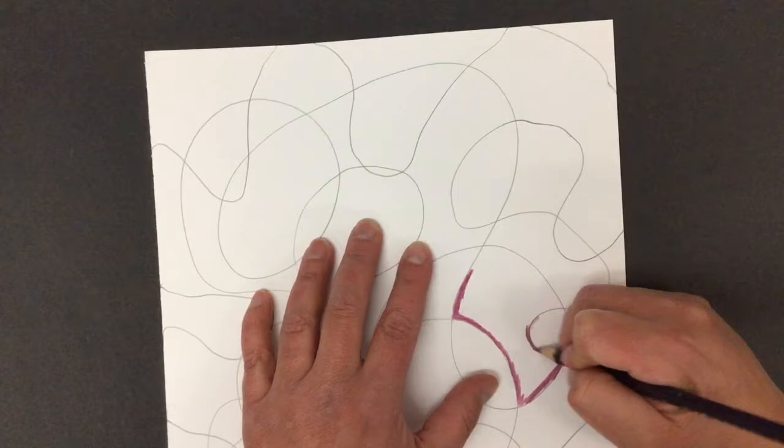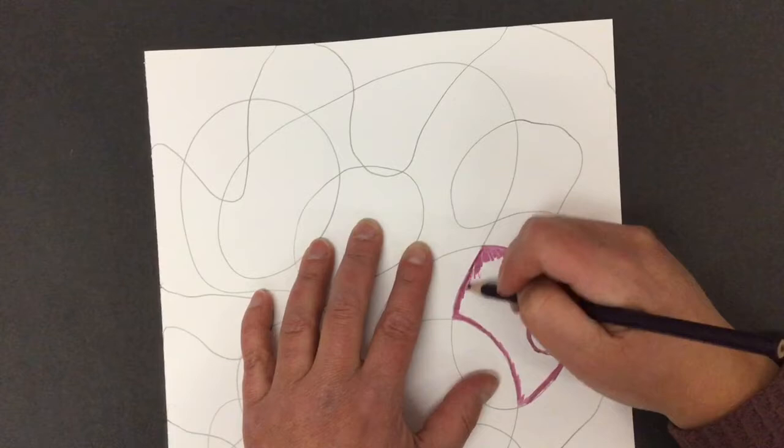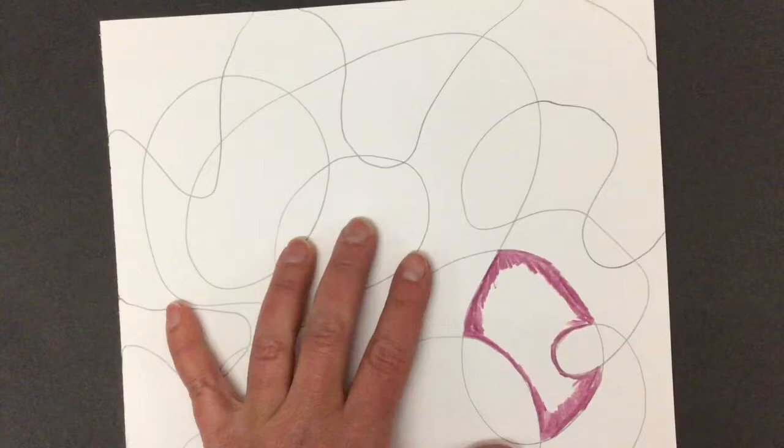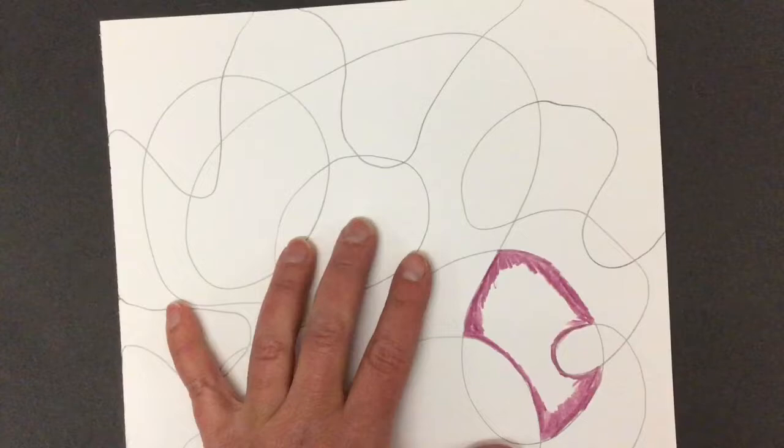So for this, I'm going to go from the outside dark. That's why I'm kind of outlining it. And then I'm going to gradually fill it in and get lighter and lighter as I get closer to the center because it has a different value in the center. I'm going to zoom in there so you can see.